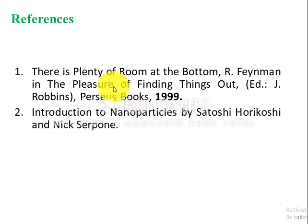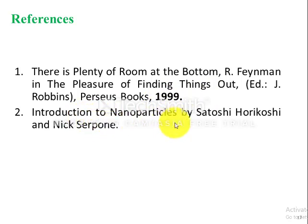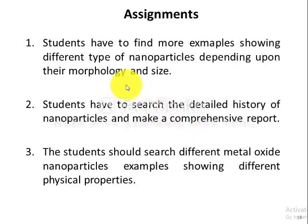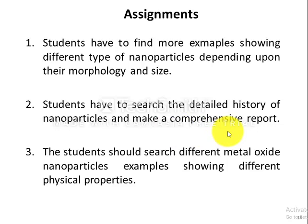The references for this lecture are: 'There is Plenty of Room at the Bottom' by Richard Feynman, published in 1999, and 'Introduction to Nanoparticles' by Satoshi Horikoshi and Nick Serpone. Both books can be downloaded from the internet. Assignments: students must find more examples of different types of nanoparticles based on morphology and size, research the detailed history of nanoparticles and write a comprehensive report, and search for different metal oxide nanoparticle examples and describe their physical properties.